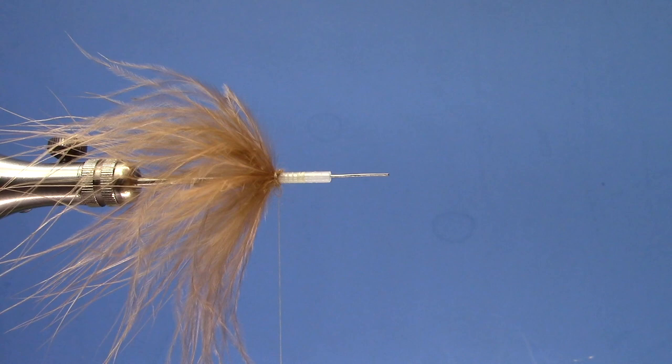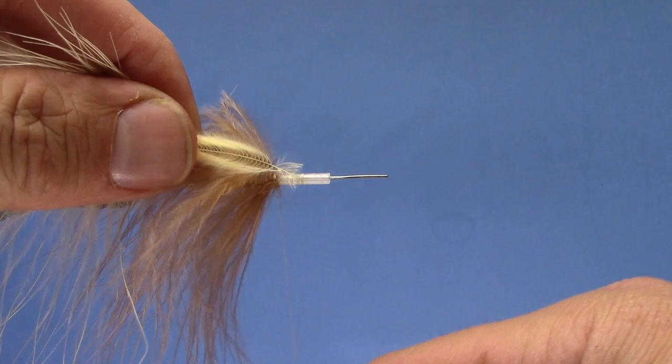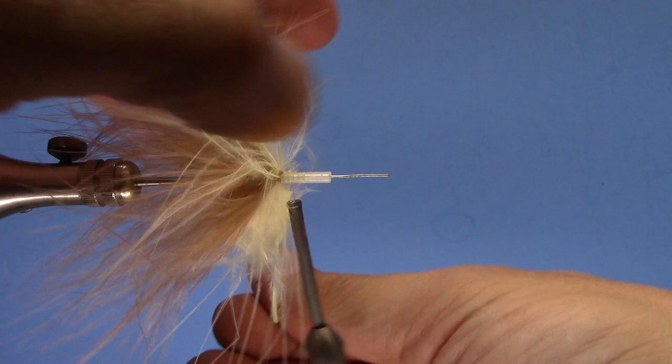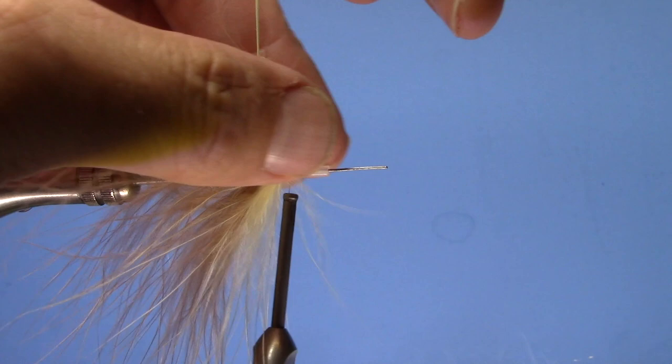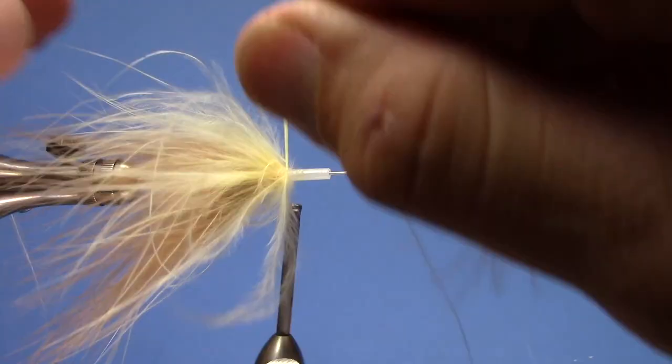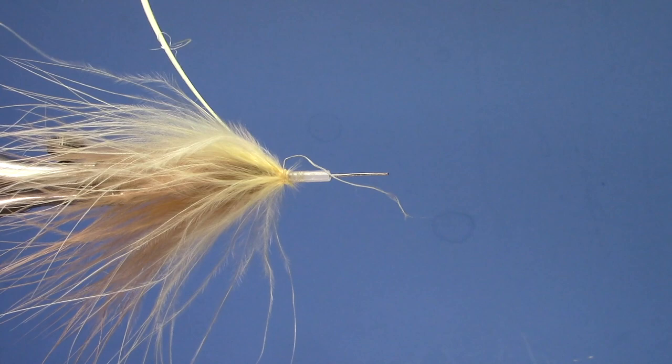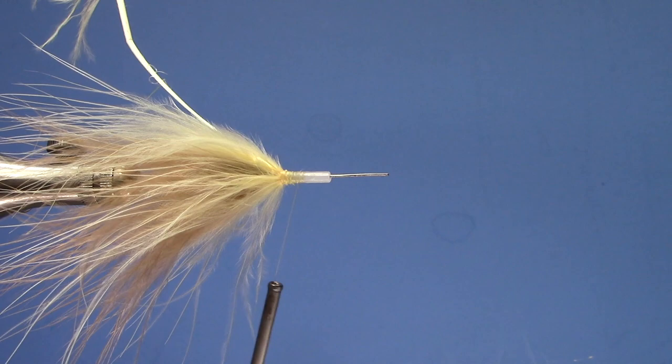Now I've got a cream piece of Marabou that I do the same thing to the feather with. Tie that in. Do the same thing, just a few wraps. And that's probably good right there. Tie that off. There we go. Trim that stem.